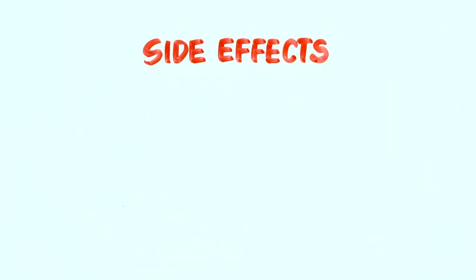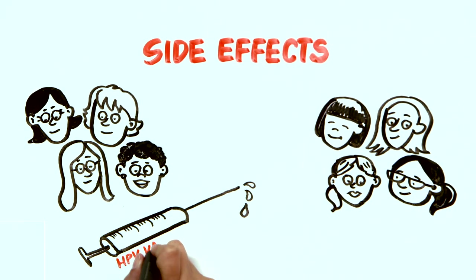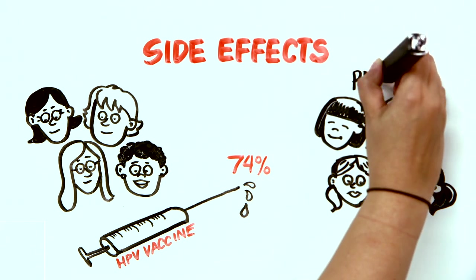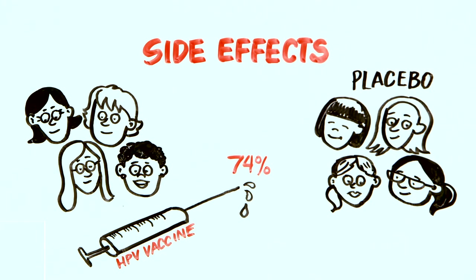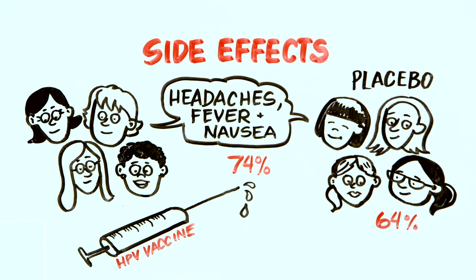Another way to assess side effects is by following people during research trials. In the case of the HPV vaccine, this method shows that about 74% had some kind of reaction to the vaccine, but interestingly, so did 64% of people who got the placebo. So people had headaches, fever, nausea.